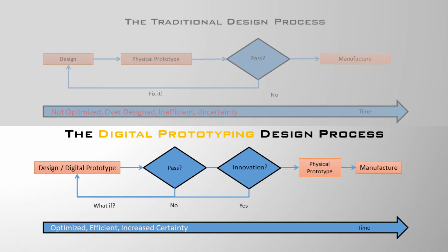In contrast, the digital prototyping method uses virtual testing to eliminate failed designs before a physical prototype is constructed. Initial concepts may fail to meet requirements, but iterating digitally is far less time-consuming and costly than iterating physically. In fact, iterating the design is so efficient with digital prototyping that the designer can afford to continue iterating even when the design has passed, in the search for a design that not only works, but is of the highest quality and lowest cost. New innovations can take shape, and better products are the result — all before the first physical prototype is constructed.